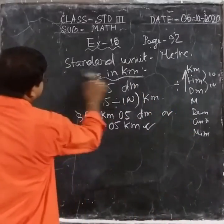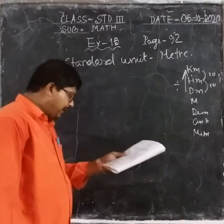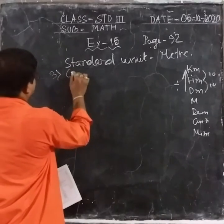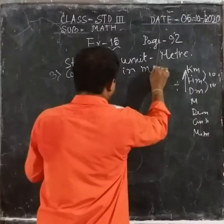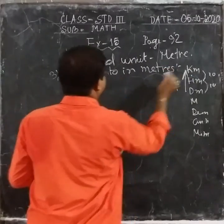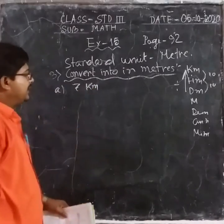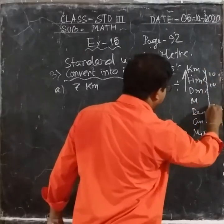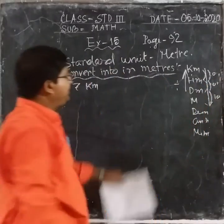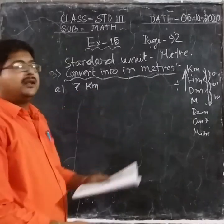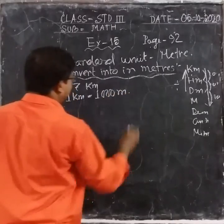Now move to question number 3. I will show you only one; the rest are your homework. Convert into Meter. Each step is multiplied by 10, so from Kilometer to Meter there are 3 steps — that means multiply by 10 × 10 × 10, which is Ten Thousand — no, that means One Thousand. Whenever you convert Kilometer into Meter, you multiply by 1000. One kilometer equals to One Thousand Meters.